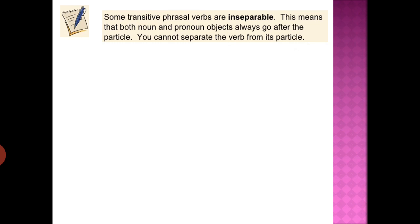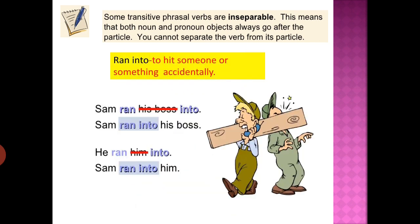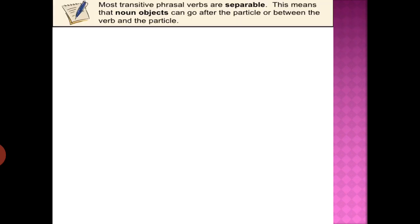Transitive phrasal verbs are sometimes inseparable, meaning both noun and pronoun objects always go after the particle — you cannot separate the verb from its particle. For example, 'ran into' means to hit someone or something accidentally. 'Sam ran into his boss' is correct. You cannot write 'Sam ran his boss into' or 'He ran him into.' The correct form is 'Sam ran into him.'